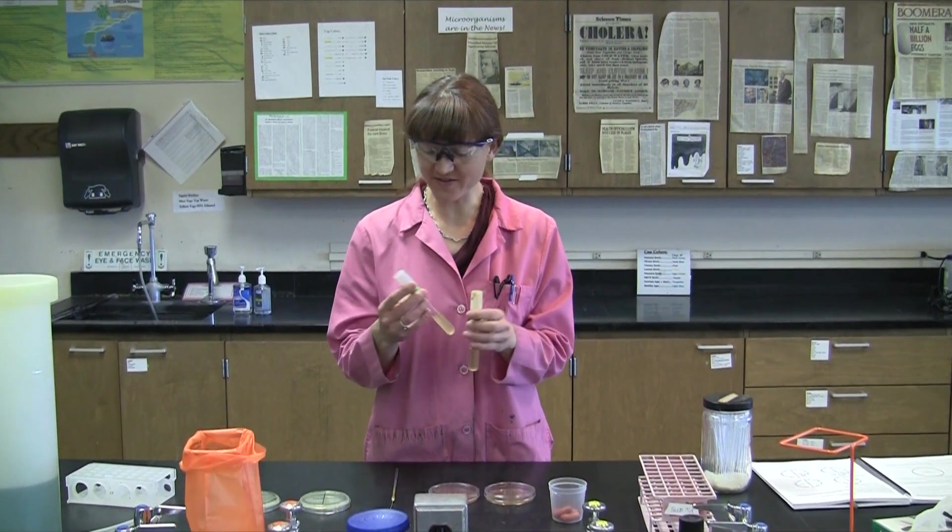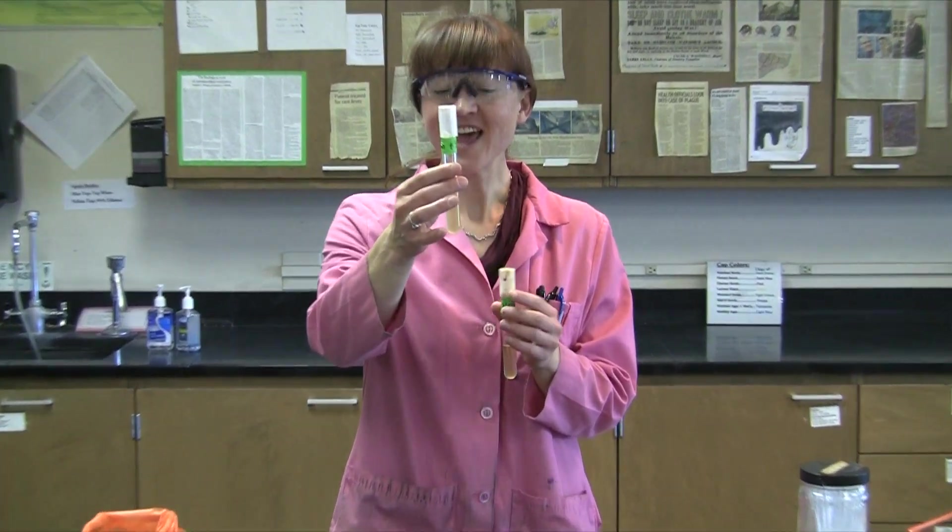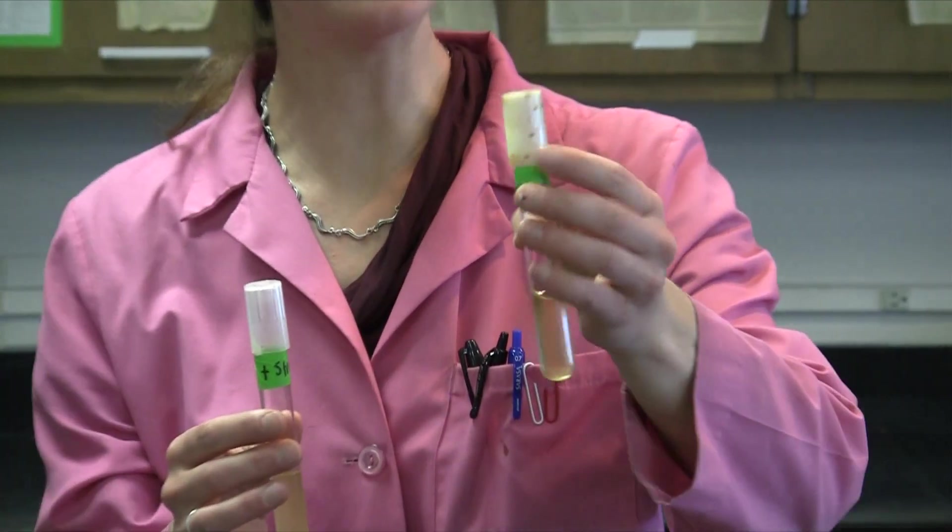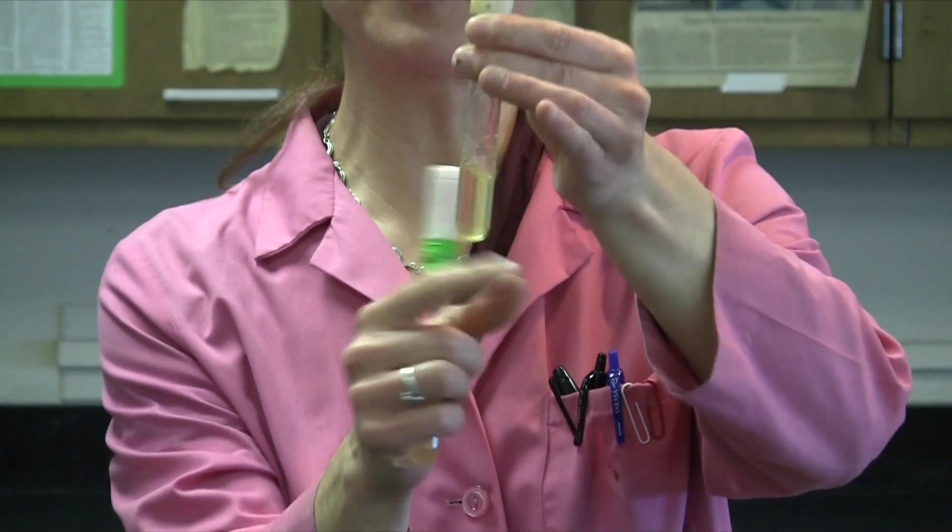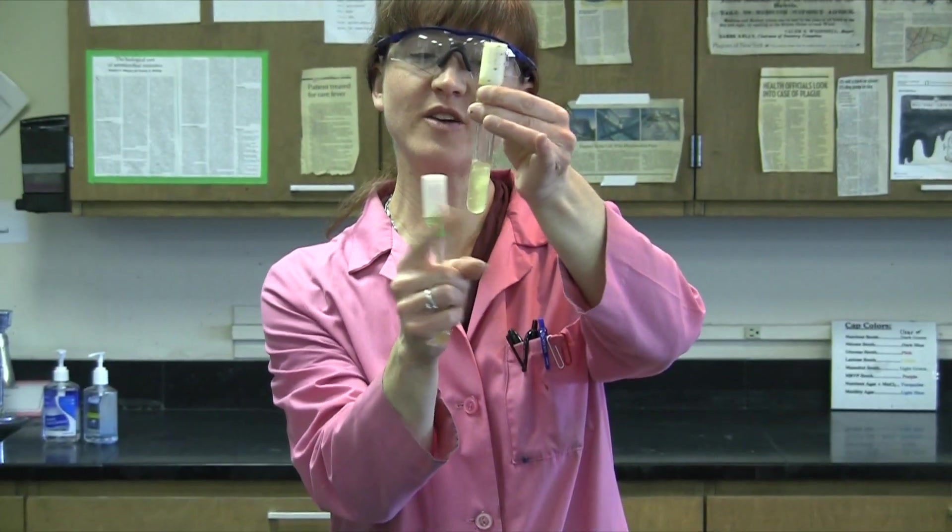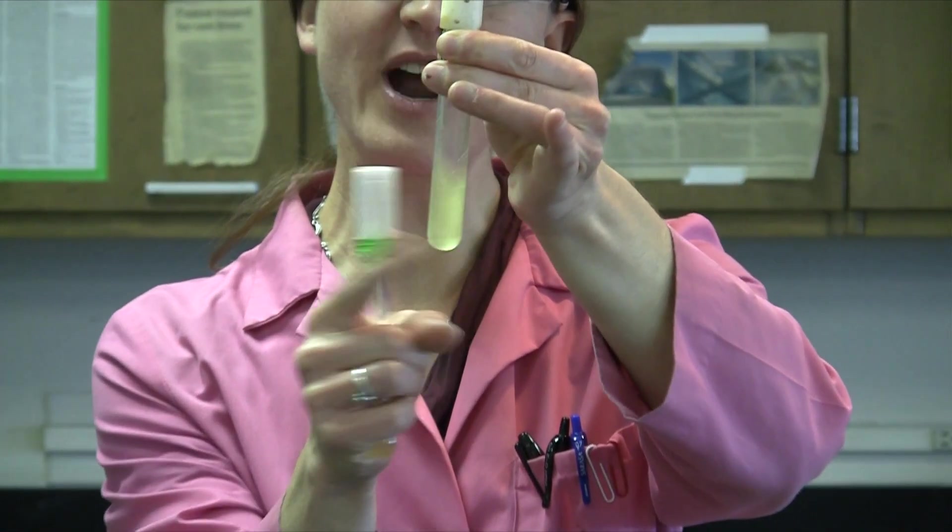We had our two broth tubes, and to one of them we had added streptomycin, and to the other we had not added any streptomycin. So in the one without streptomycin, we assume that everything grew up and is thriving in there, no matter whether it's a mutant or not.